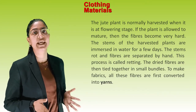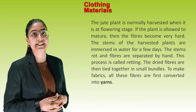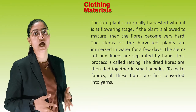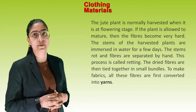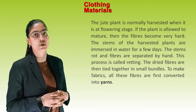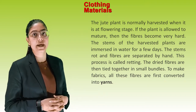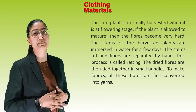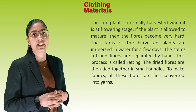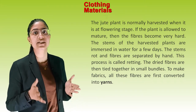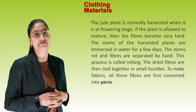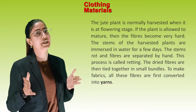The jute plant is normally harvested when it is at the flowering stage; if the plant is allowed to mature, the fibre becomes very hard. The stems of the harvested plants are immersed in water for a few days. The stems rot and fibres are separated by hand — this process is called retting. The dried fibres are then tied together in small bundles to make fabrics, with all fibres first converted into yarns.